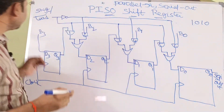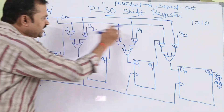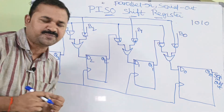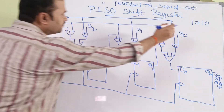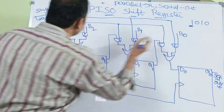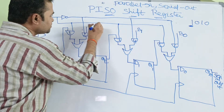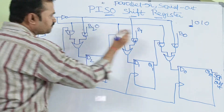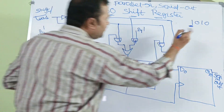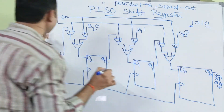The inputs are B3, B2, B1, B0. B3 is the most significant bit, so B3 is 1. Next B2 is 0, B1 is 1, and B0 is the LSB, which is 0. So the input is 1010.